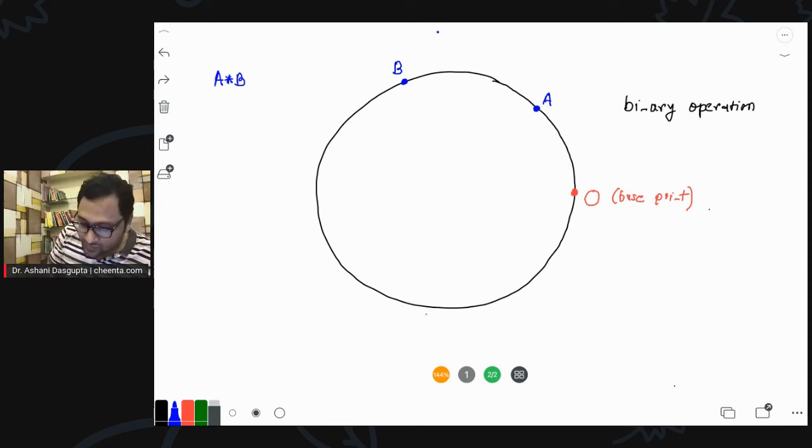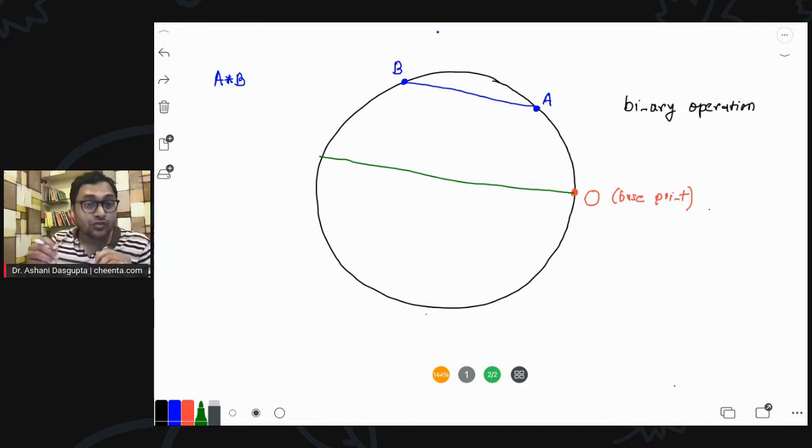So, how do we find out this third point, the output point? What we do is we just join A, B by a segment. And from O, draw a line that is parallel to A, B. Wherever it hits, that point is A star B. This is how we define it.